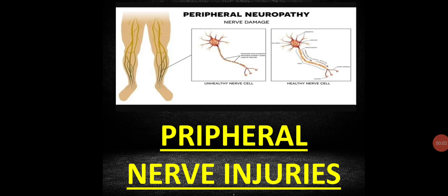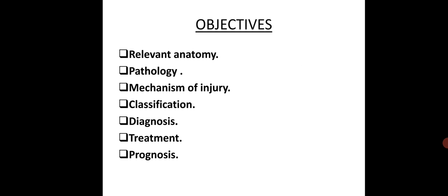Today's class is about peripheral nerve injuries. The objectives are: relevant anatomy, pathology, mechanism of injury, classification, diagnosis, treatment and prognosis.